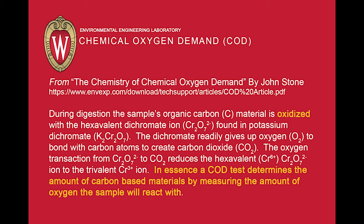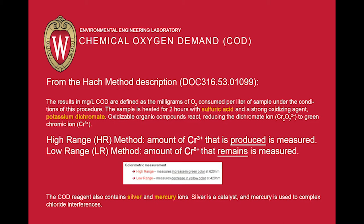We then measure colorimetrically, or by the color changes in the visible spectrum. COD is basically milligrams of oxygen consumed per liter of sample in the presence of strong acid, heat, and potassium dichromate.